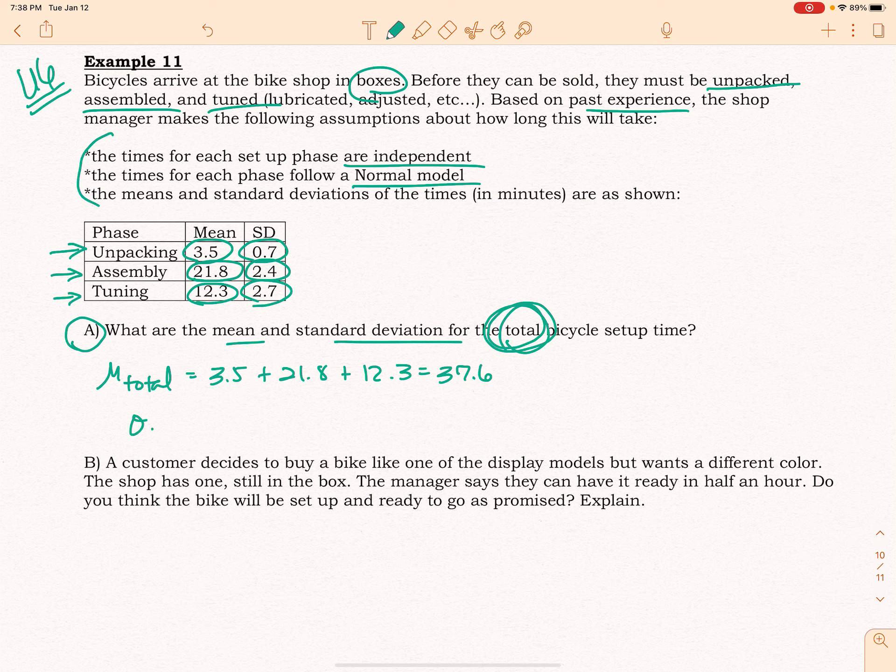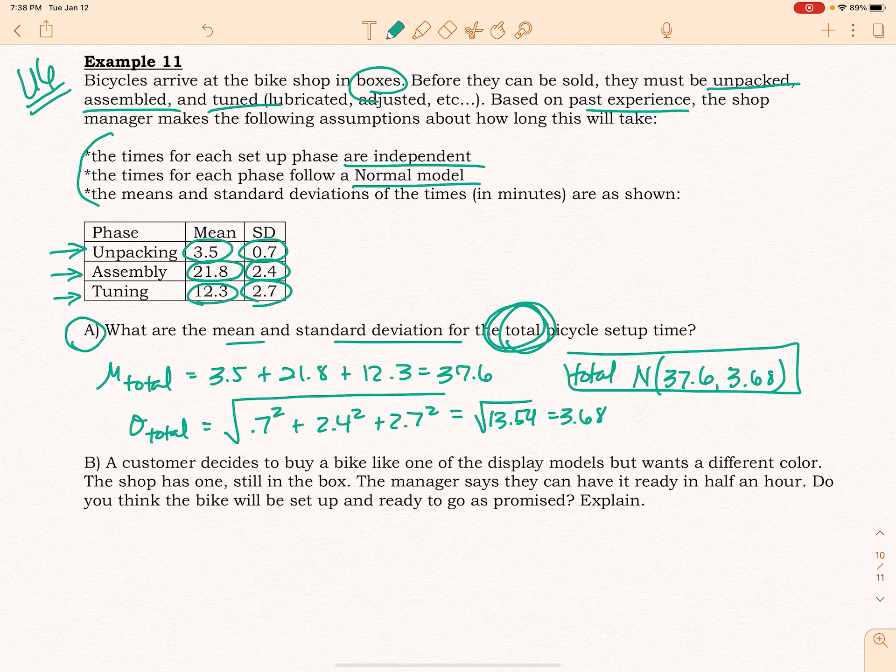The standard deviation for the total—of course, we can't just add the standard deviations. We have to add the standard deviations squared, and then take the square root of that. So we end up taking the square root of 13.54, which gives me 3.68. So the new normal model for the total time is N(37.6, 3.68).